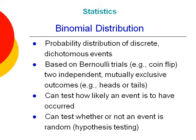The binomial distribution is the probability distribution for discrete dichotomous events. The events we have in mind are sometimes described as Bernoulli trials, for example, coin flips, in which there are two independent mutually exclusive outcomes. We can use the binomial distribution to test how likely an event is to have occurred, or we can test whether or not an event is random or the result of chance alone, which is essentially what we do when we do hypothesis testing.